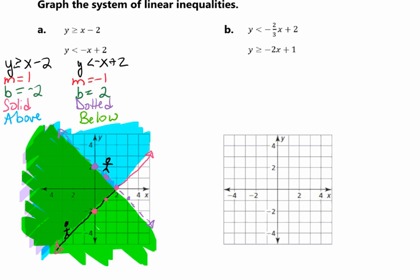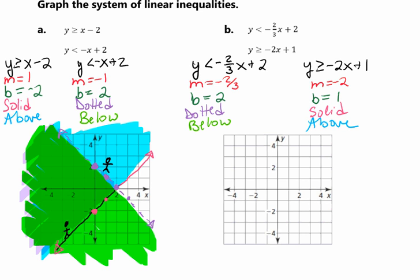Now we'll try letter B. For our first inequality, y is less than negative 2 thirds x plus 2 — we have a slope of negative 2 thirds and a y-intercept of 2. Because it's strictly less than, it's dotted and shaded below. For our second inequality, y is greater than or equal to negative 2x plus 1 — slope of negative 2, y-intercept of 1. Because it's greater than or equal to, we have a solid line shaded above.